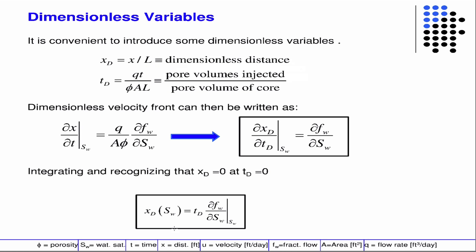And then we introduce some dimensionless variables. We take xD to be the position x divided by the total length, and we take tD to be the amount of pore volumes injected. The amount of pore volume injected is q times time, divided by the pore volume of the core — that gives us a dimensionless time. So then, from the equation we just derived, the velocity is proportional to the derivative of the fractional flow curve with respect to saturation. Introducing the dimensionless variables — x becomes xD, t becomes tD — this equation can be integrated with respect to time.